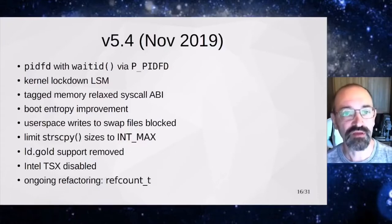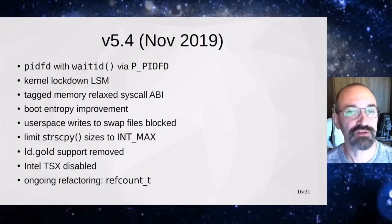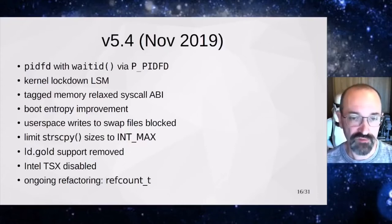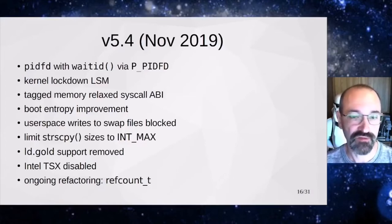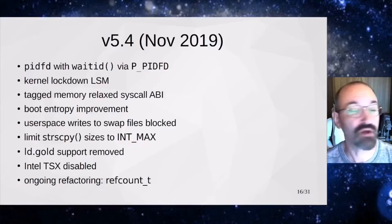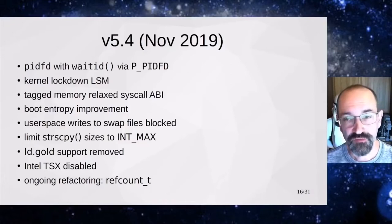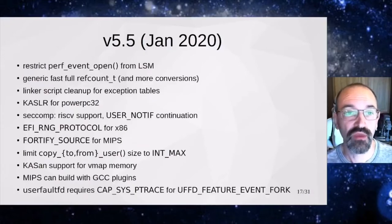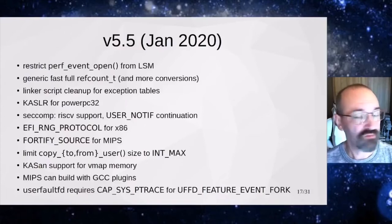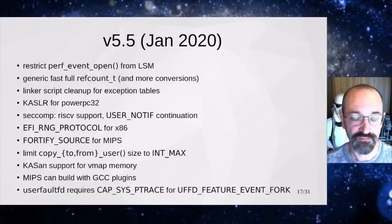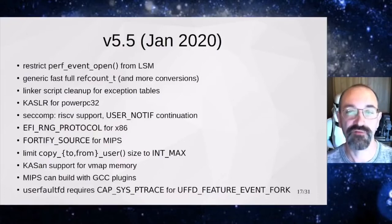In 5.4 we also made improvements to boot entropy, blocking writes to swap files — you could actually write to a swap file even though it was being used for swap, which could corrupt all sorts of things. We added detection of ridiculous size overflows: if you see a size greater than INT_MAX, it probably means you wrapped around and something believes it's negative. Intel TSX support was removed, and we continued refactoring ref counts. PERF has been a persistent source of flaws, so we gained LSM hooks to disable it with a much larger hammer.